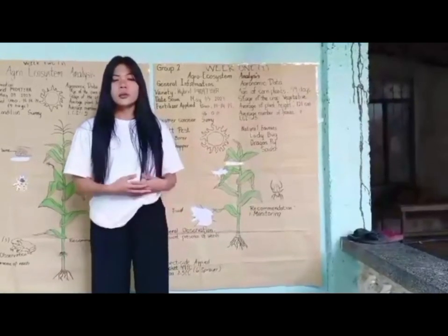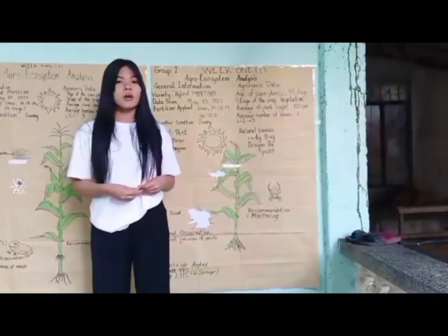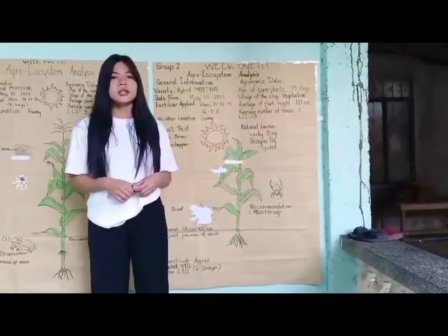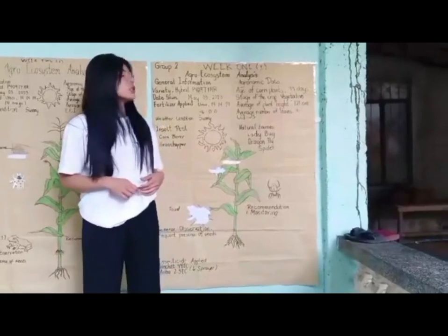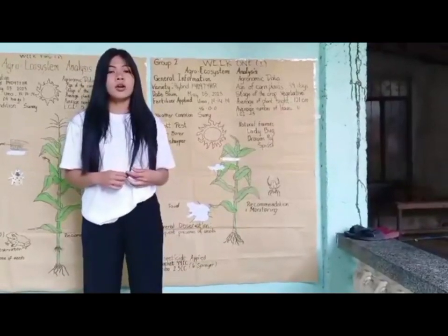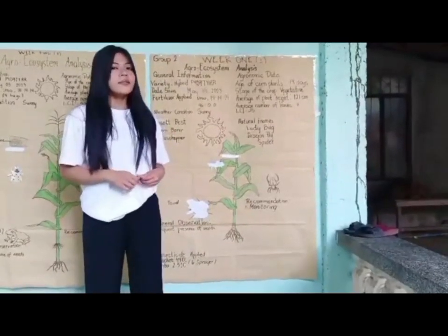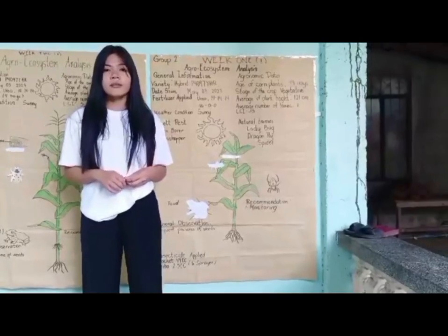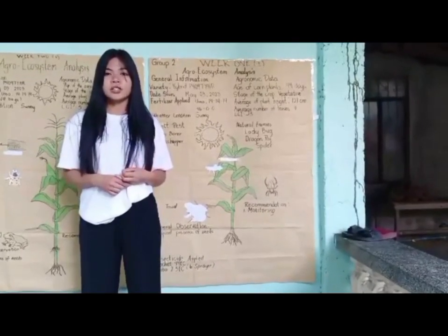Good day everyone. I'm Magritte Aishabino from Group 2, and I'm here to discuss the agro-ecosystem analysis of corn production. Plant growth is identified by its environment, biotic, and abiotic factors.